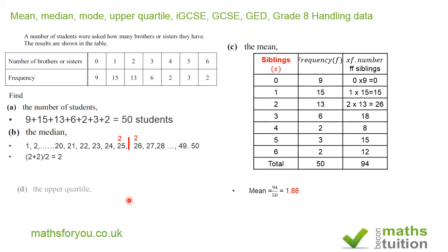Now for part D, we're asked to find the upper quartile. Now the upper quartile is the 75th percentile. So 75% of 50 is 37.5. So you want to find the category in which the 37.5th student belongs.